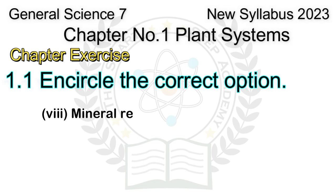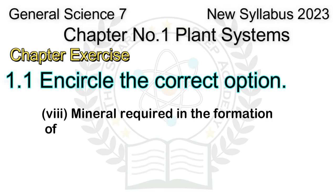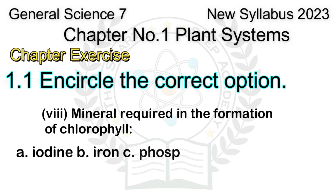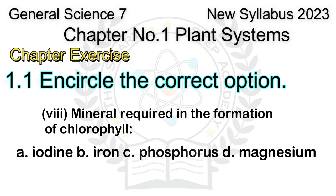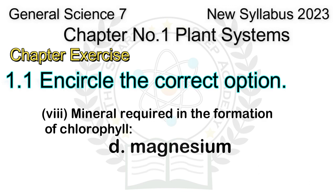Question 8: The mineral required in the formation of chlorophyll is: A. Iodine, B. Iron, C. Phosphorus, D. Magnesium. Answer: D. Magnesium.